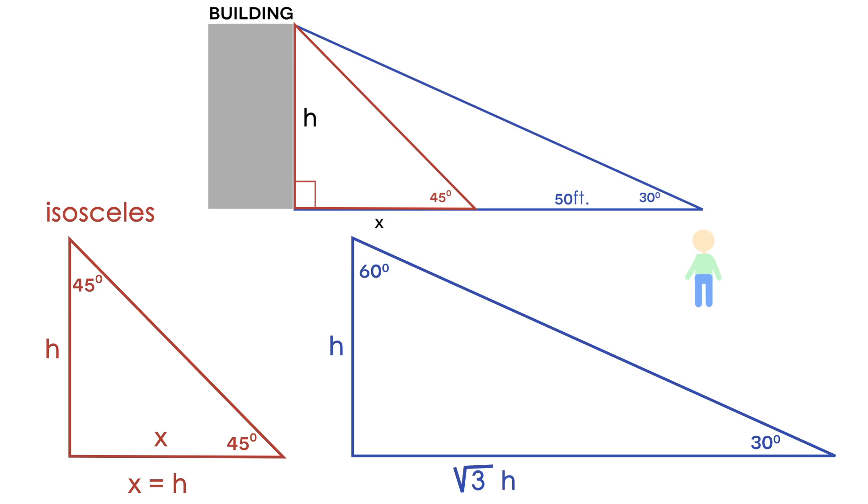And we also know from looking at our diagram that the length of this bottom side of the triangle is equal to the bottom of the 45 degree triangle, which is h, plus 50 feet. So the square root of 3 times h is also equal to h plus 50.